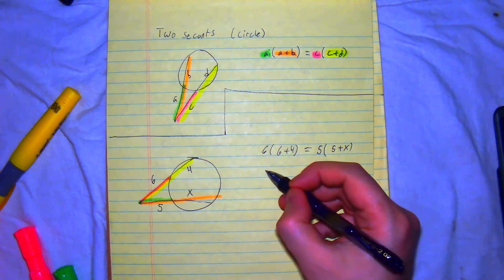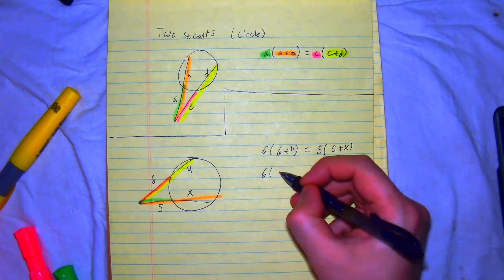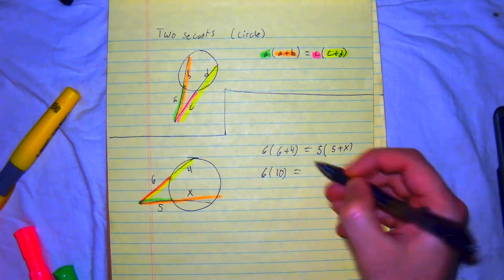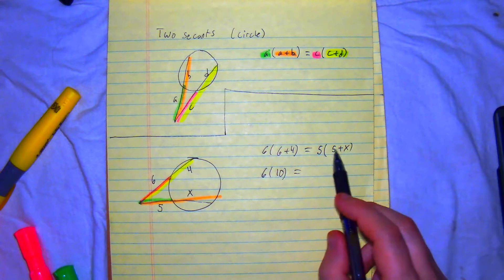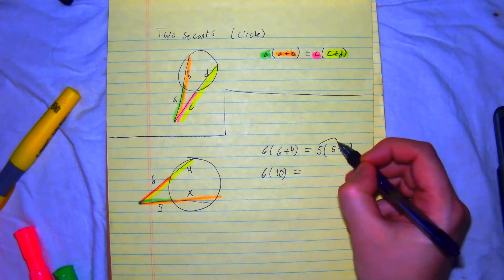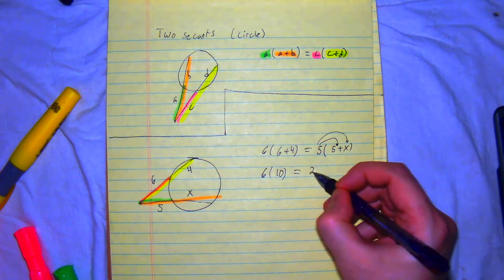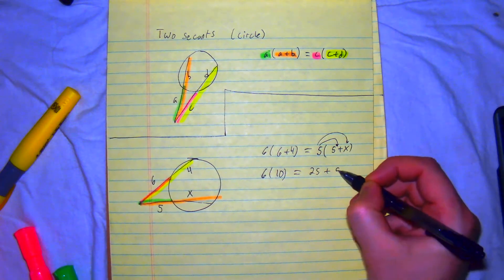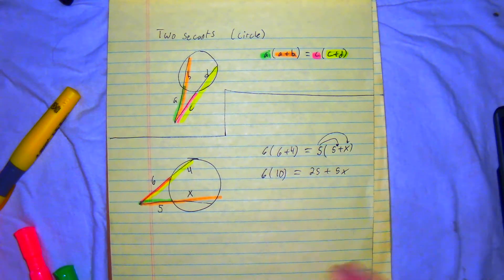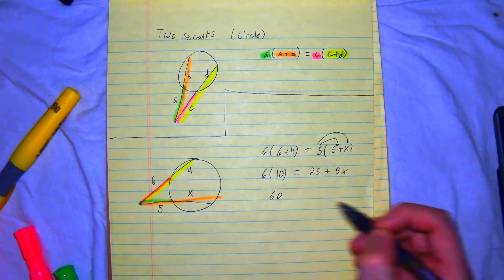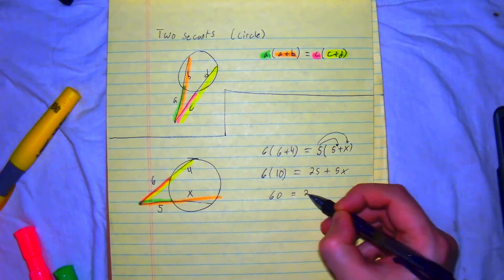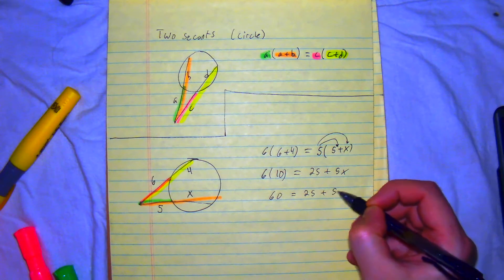From here you get 6 times 10 is equal to... You got to distribute here. 5 times 5 and then 5 times X. So, you get 25 plus 5X. You get 60 is equal to 25 plus 5X.